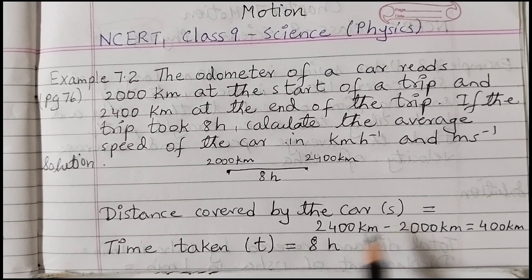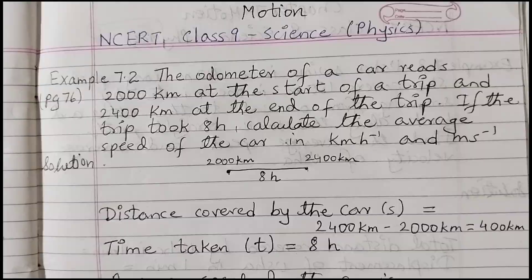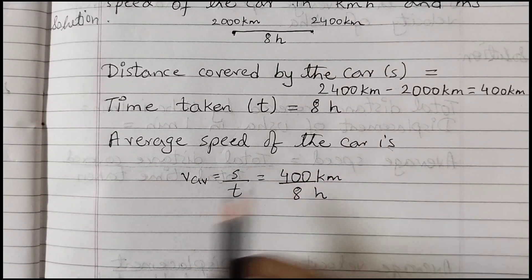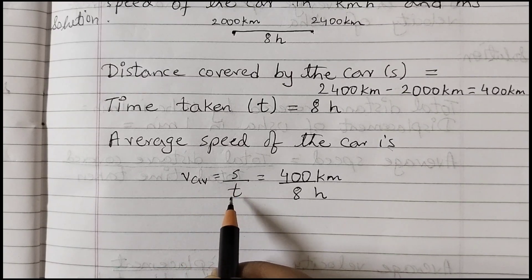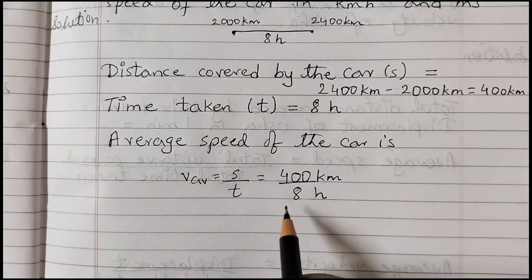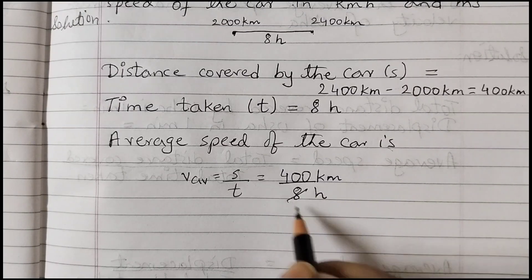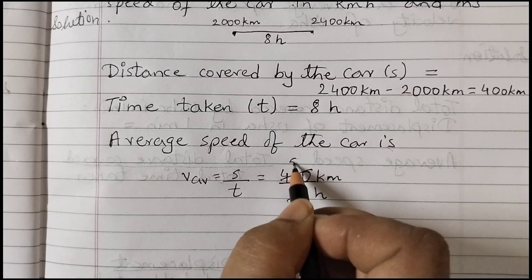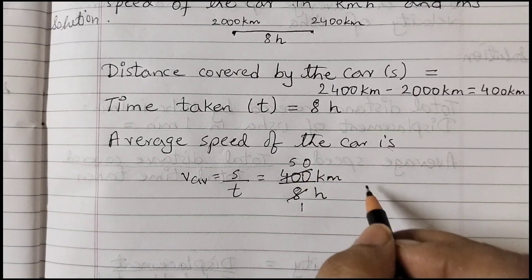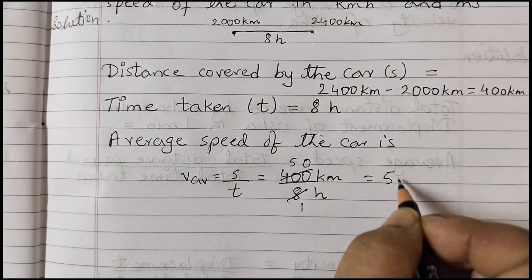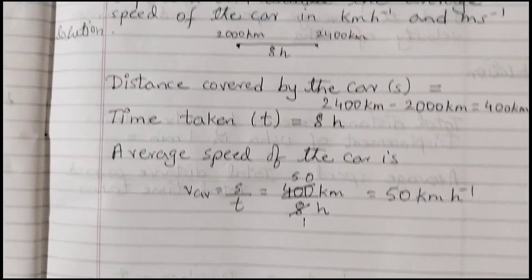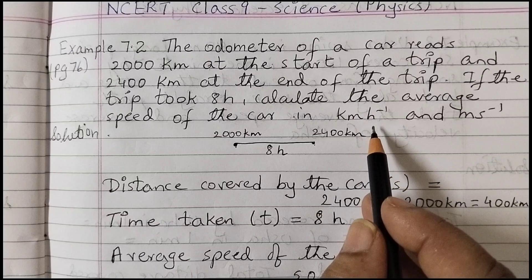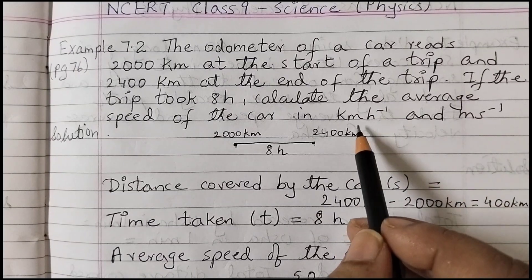Distance is denoted by s, time by t. The formula is: average speed, denoted as v_avg, equals distance divided by time. Distance is 400 km and time is 8 hours, so speed equals 400 divided by 8, which is 50 kilometers per hour.